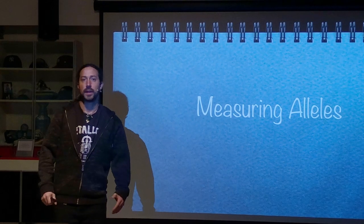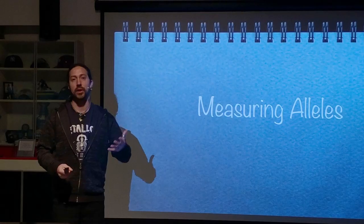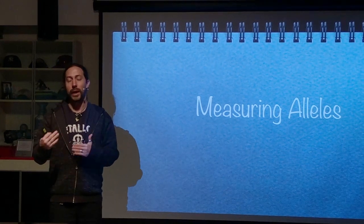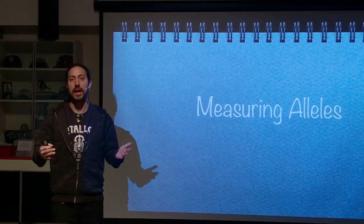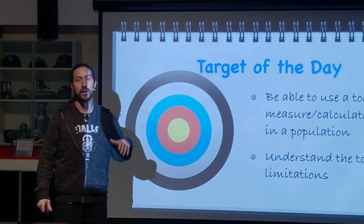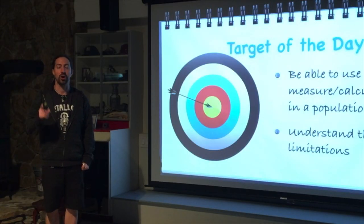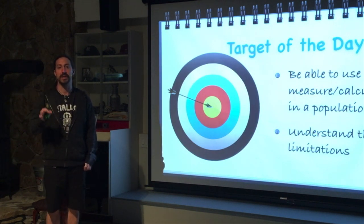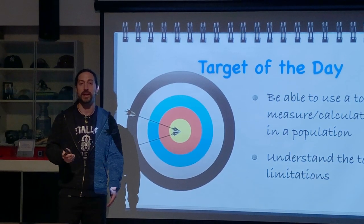Welcome everyone. Today we're going to be looking at measuring alleles. In the past couple of videos, we talked about how showing evolution requires a change in allele frequency. Today we're going to show how we actually measure that change. We'll use a specific tool that allows us to calculate allele frequencies, but that tool also has limitations — and recognizing those limitations is extremely important in scientific research.